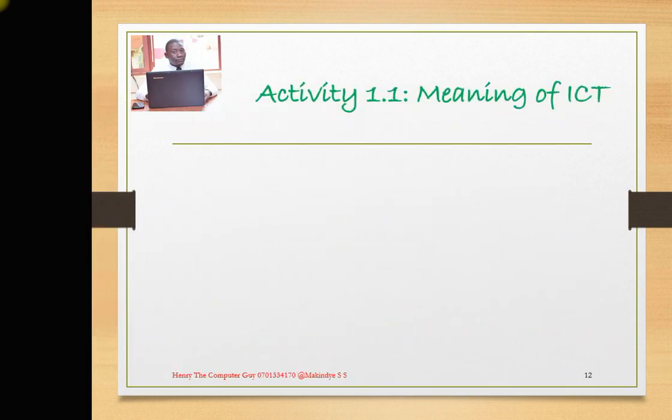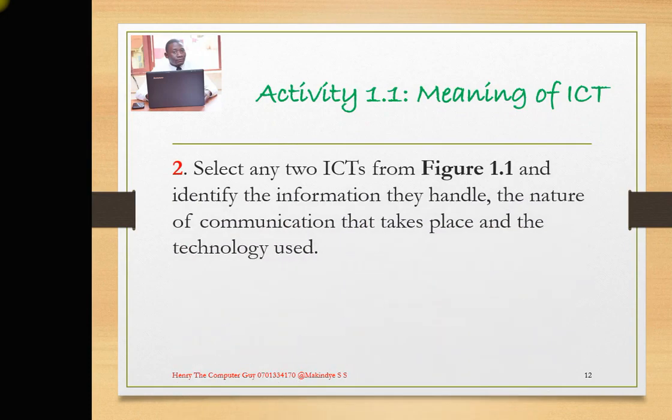We are still on activity 1.1, number 2. They are telling us to select two ICTs from figure 1.1 — remember we saw those figures where we had the Wi-Fi, the mobile phone, the microwave, the satellite dish, the smart TV. So they are telling us to select any two ICTs from that figure and identify the information they handle, the nature of communication that takes place, and the technology they use.